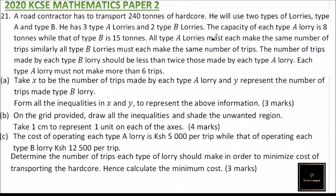All type A lorries must each make the same number of trips. Similarly, all type B lorries must make the same number of trips. The number of trips made by each type B lorry should be less than twice those made by type A lorry. Each type A lorry must not make more than six trips. Take X as the number of trips made by each type A lorry, and Y as the number of trips made by each type B lorry. Form the inequalities in X and Y to represent the above information.